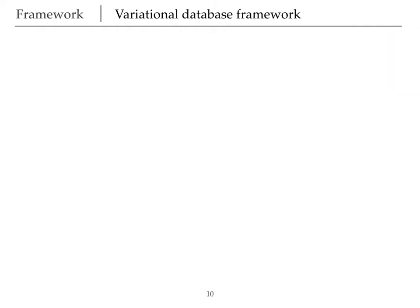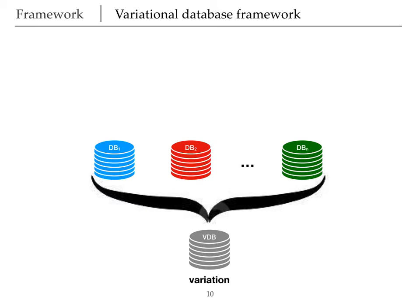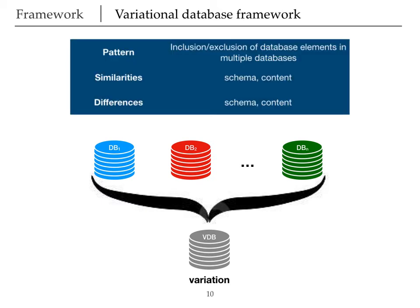So what we want to do is to put all these databases in one database smartly. And since these databases share a good part, we take advantage of that and do not repeat the shared parts. So the pattern is the inclusion and exclusion of database elements in multiple databases with similarities and differences. These similarities appear in either the schema or the content of the database, and so do the differences. The very important goal that we want to achieve is query all these databases at the same time and have a handle on the variation in our query as well as getting the result of our query from all these databases in one place without losing the information of which returned tuple belongs to which database.